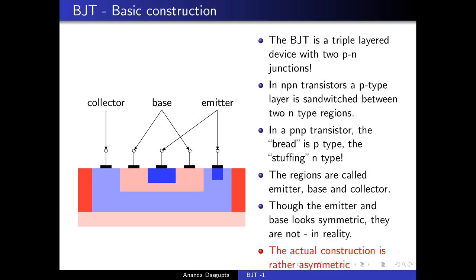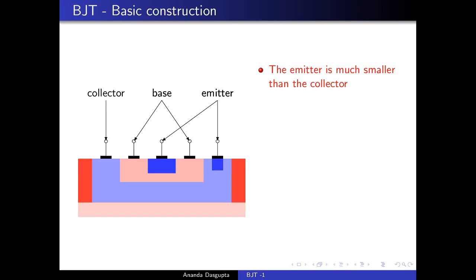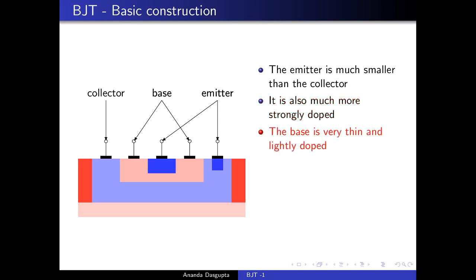This is a typical NPN transistor construction in an integrated circuit. A PNP transistor would be similar with P and N types interchanged. The asymmetry is significant: the emitter is much, much smaller than the collector and is also much more strongly doped. The base is very, very thin — much thinner than any picture shows — and is very, very lightly doped. There is a reason for all this which will be clarified.